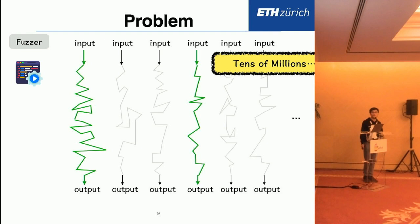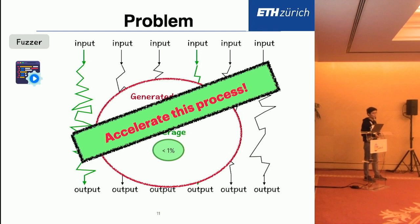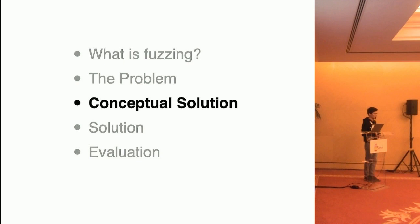The fuzzer will generate tons of inputs for the target program, often tens of millions of inputs per hour or day. For each input, it tries to execute it and test if it increases coverage. But the truth is, although it generates so many inputs, only a tiny fraction of them are truly interesting and required for execution. The fuzzer, however, spends most of its time on the rest of the uninteresting inputs. In this work, our target is trying to accelerate this process with a new concept that we call prefix-guided execution.